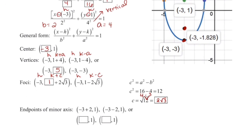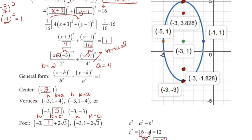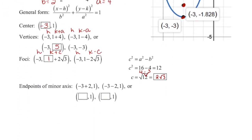Finally, our endpoints of the minor axis — the short ones — are the left and right of the short side. How we obtain those endpoints: negative 3 plus 2 and negative 3 minus 2, giving us (−1, 1) and (−5, 1). And that concludes our lesson on circles and ellipses.